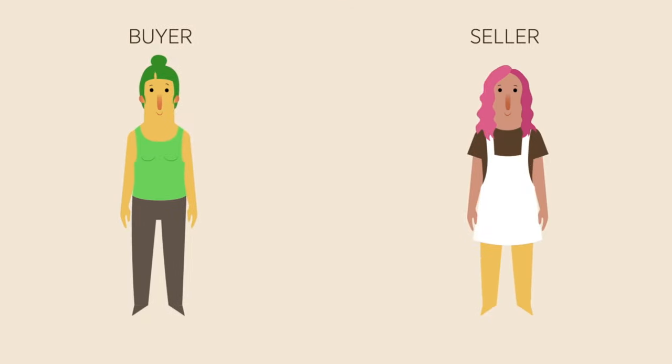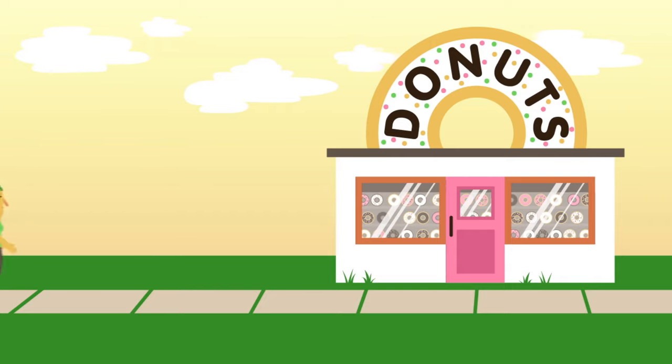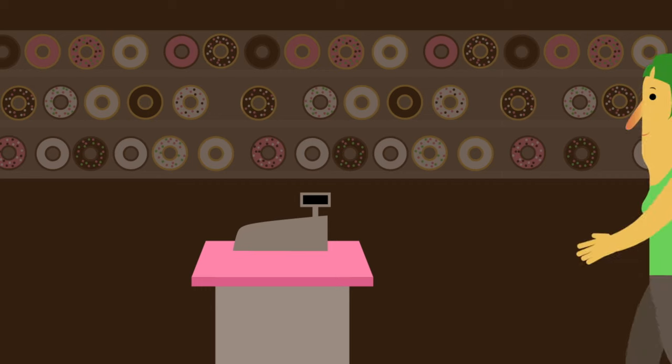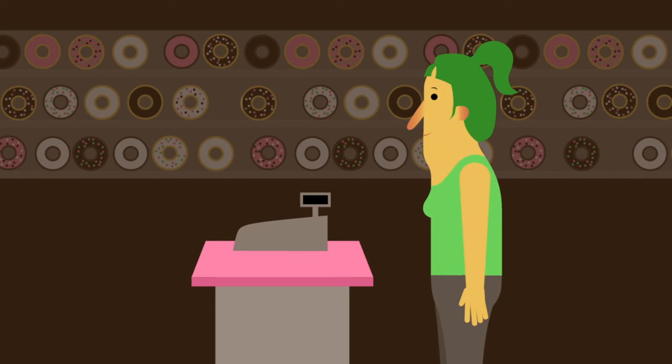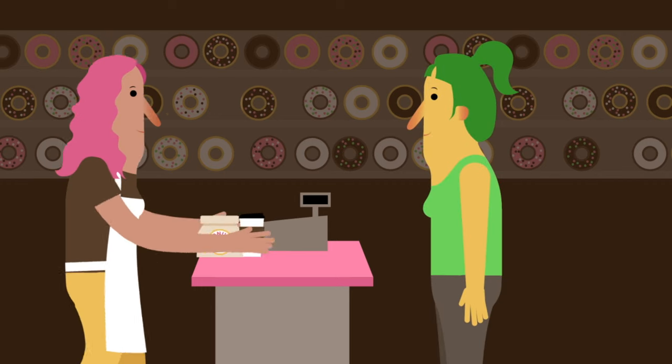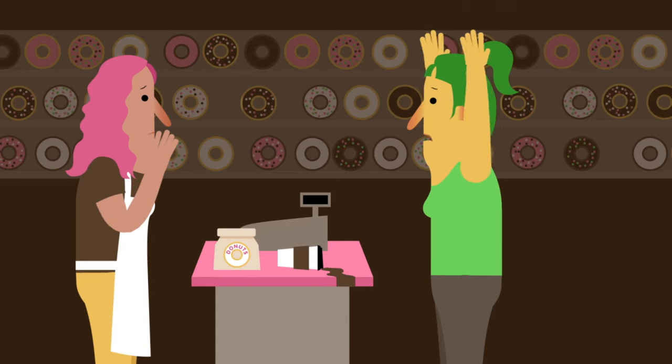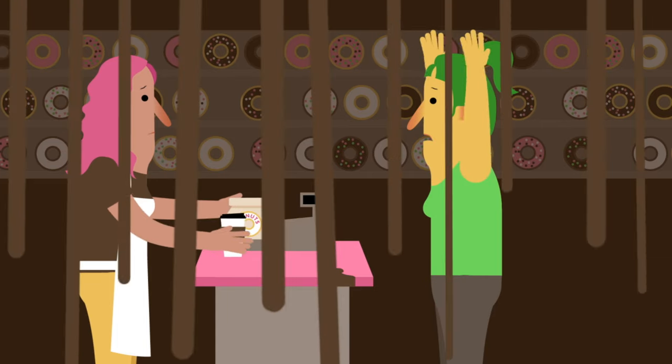When markets are functioning well, all the costs and benefits of a transaction for a good or service are absorbed by the buyer and seller. For example, when you buy a donut at the store, it's reasonable to assume all the costs and benefits of the transaction are contained between the seller and you, the buyer. However, sometimes costs or benefits may spill over to a third party not directly involved in the transaction. These spillover costs and benefits are called externalities.